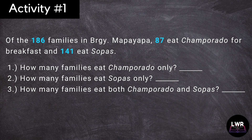Here is the problem for activity number one. Of the 186 families in Barangay Mapayapa, 87 eat Champorado for breakfast and 141 eat sopas. How many families eat Champorado only? How many families eat sopas only? And how many families eat both Champorado and sopas?